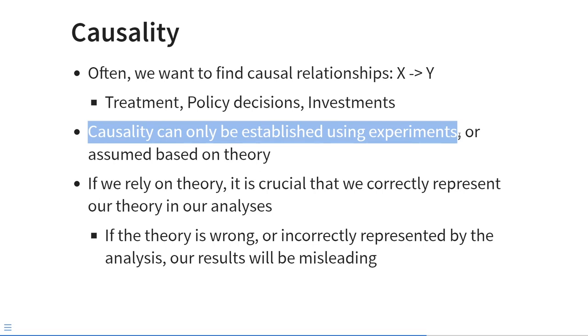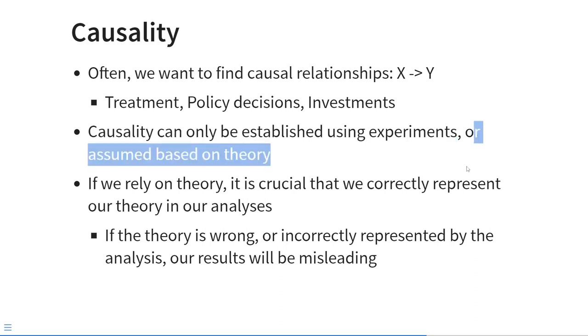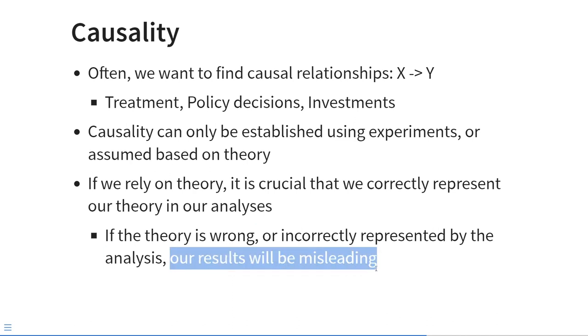But the problem is that causality can only be established using experiments with random assignment, or assumed based on theory. And if we rely on theory to assume causality, it's crucial that we correctly represent that theory in our analysis. Because if the theory is wrong, or incorrectly represented by the analysis, then all of our results will be misleading.